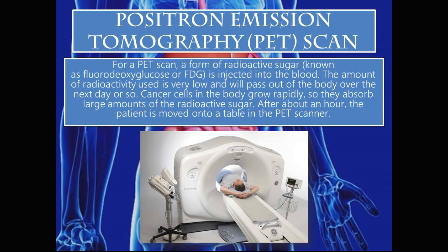Positron emission tomography (PET scan): For a PET scan, a form of radioactive sugar known as fluorodeoxyglucose (FDG) is injected into the blood. The amount of radioactivity used is very low and will pass out of the body over the next day or so. Cancer cells grow rapidly and therefore absorb large amounts of the radioactive sugar. The patient is placed on a table in the PET scanner for about an hour. The PET scan is used to confirm a malignancy — cancer cells take up the sugar and images show colourful light-ups from where the cancer cells are growing.